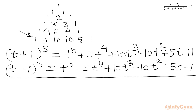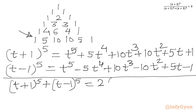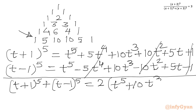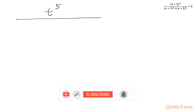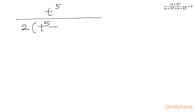Now we add these two expansions. (t+1)^5 + (t-1)^5 = 2(t^5 + 10t^3 + 5t). The odd-power terms cancel out. Let us put this value in our equation: t^5 / (2(t^5 + 10t^3 + 5t)) = 3.